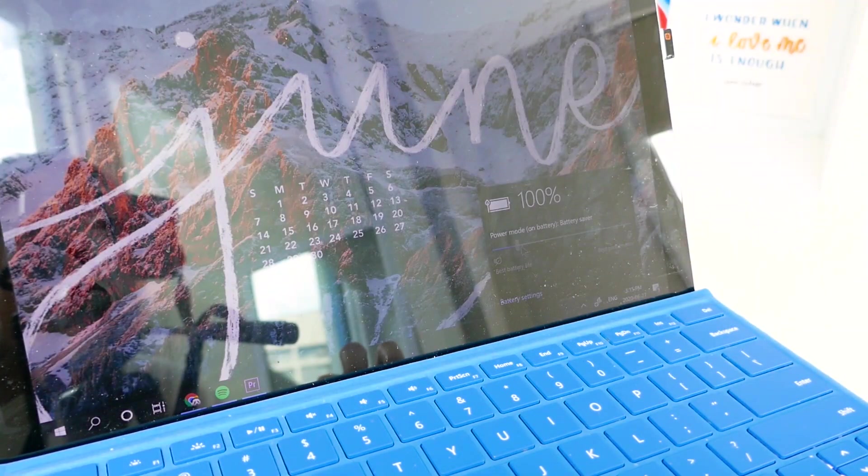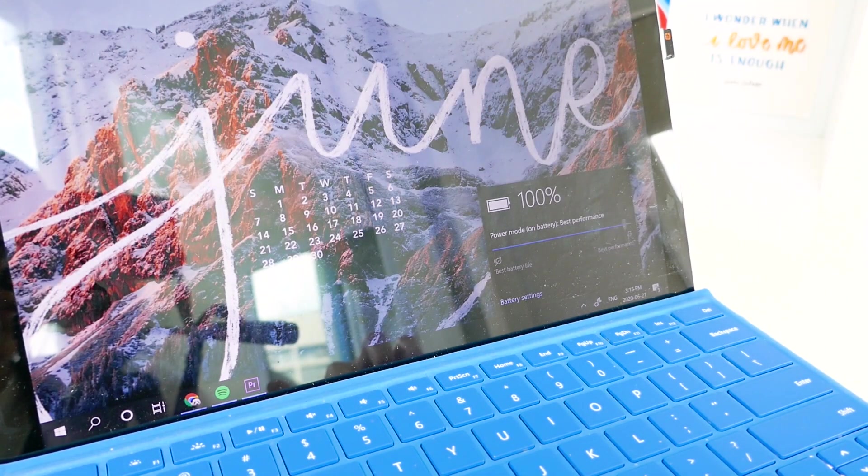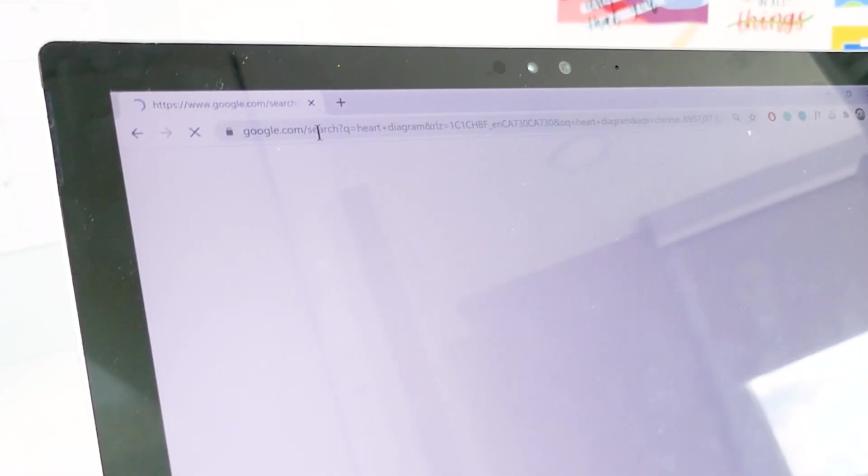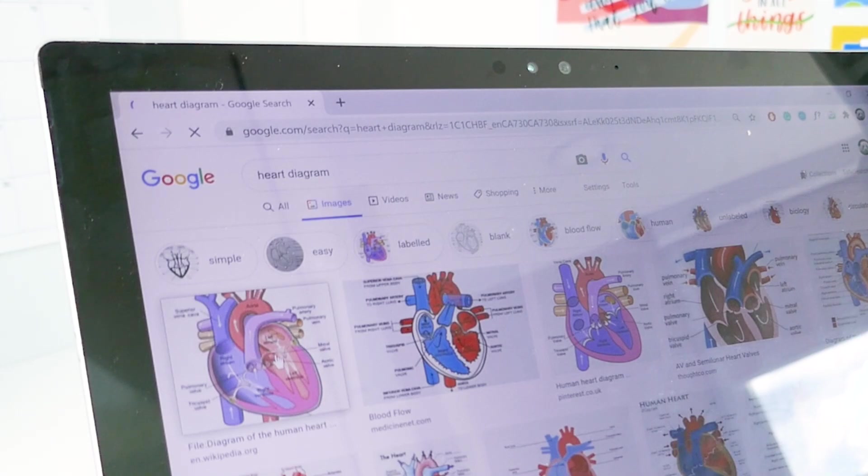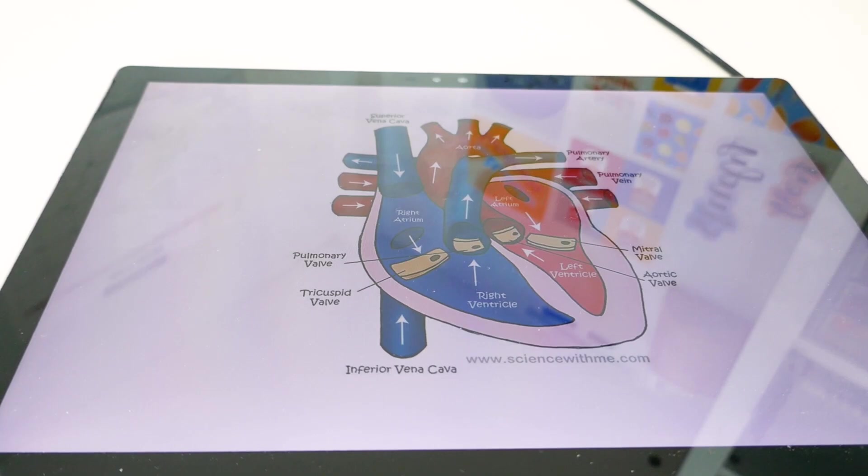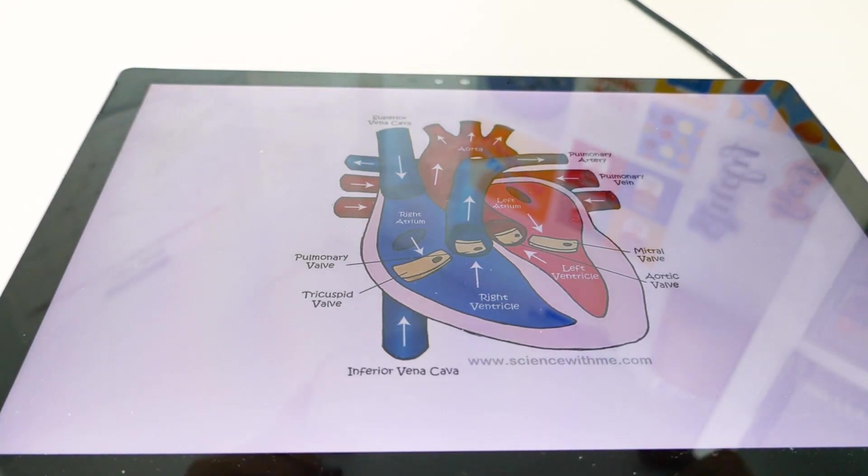Open up your computer or iPad, whatever you have, turn up the brightness, search up the image that you want to trace. Once you have that, find out which one you want and then lay it on your computer. You're gonna put a piece of paper on top and you just start tracing with a pencil.